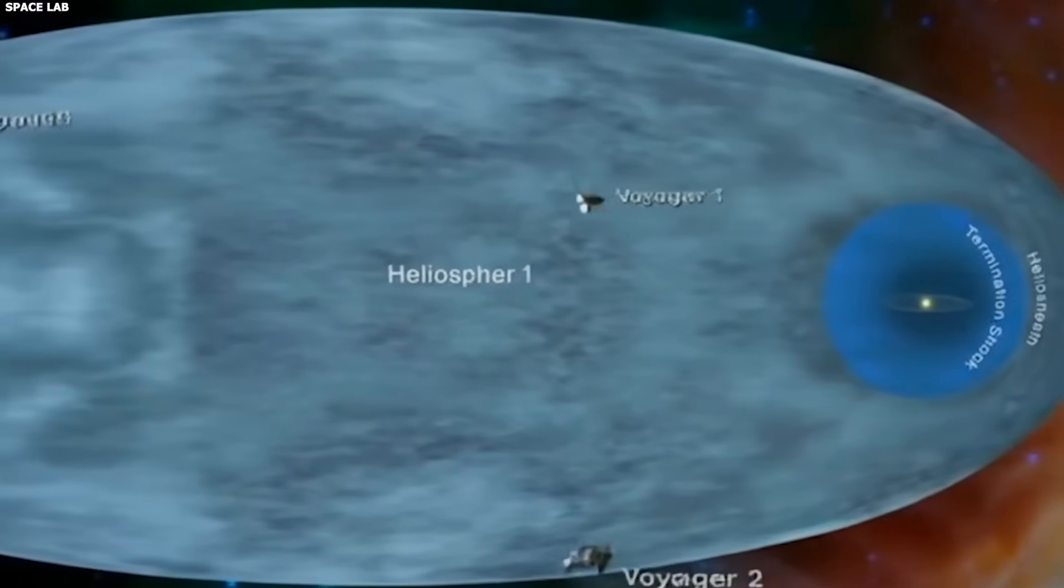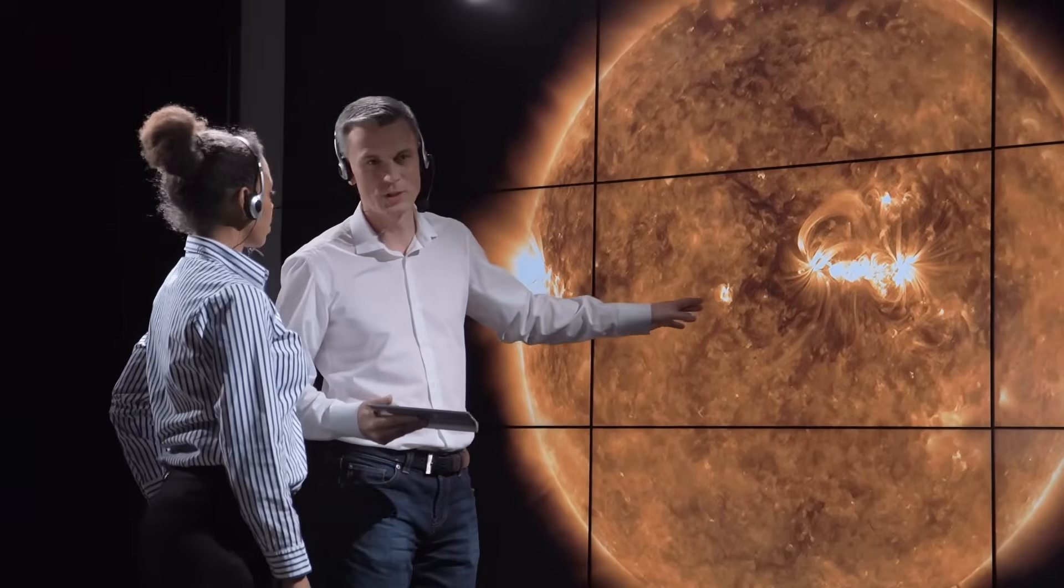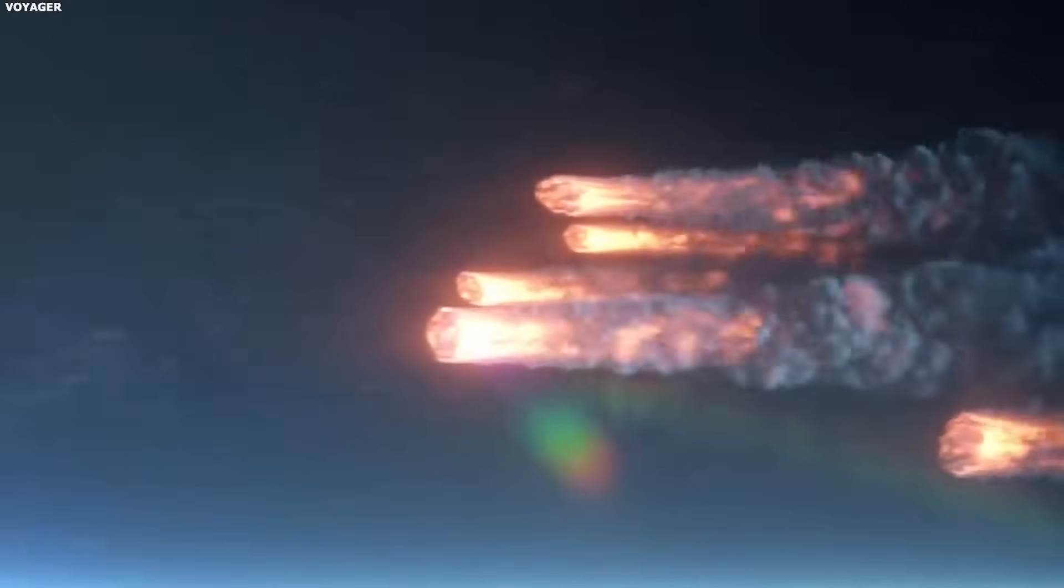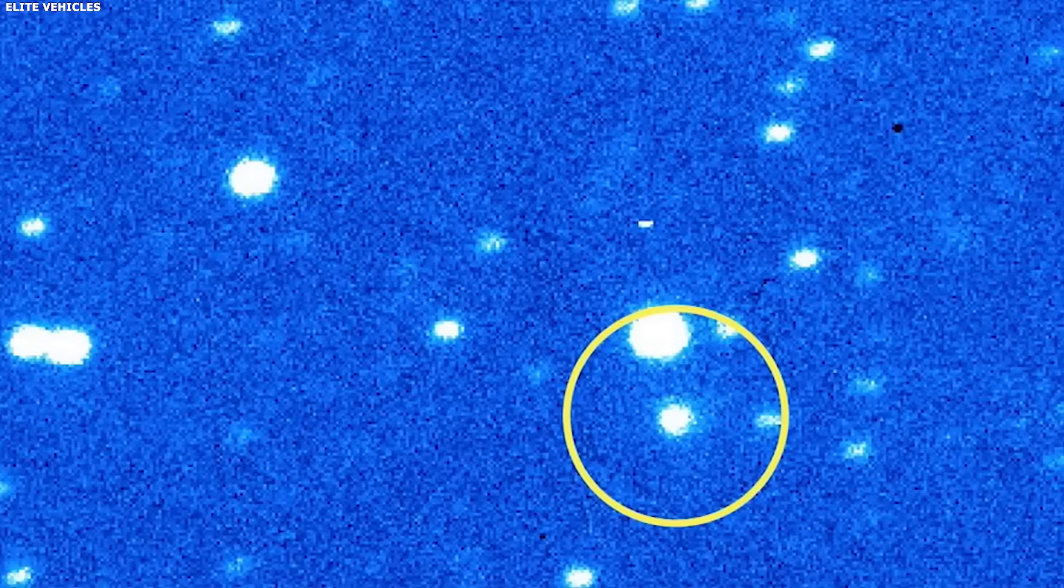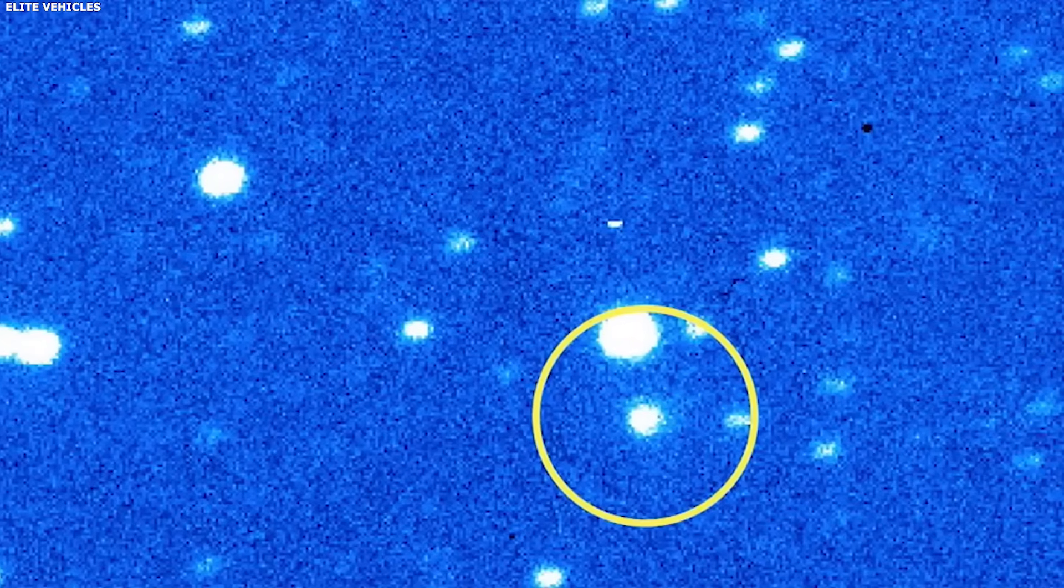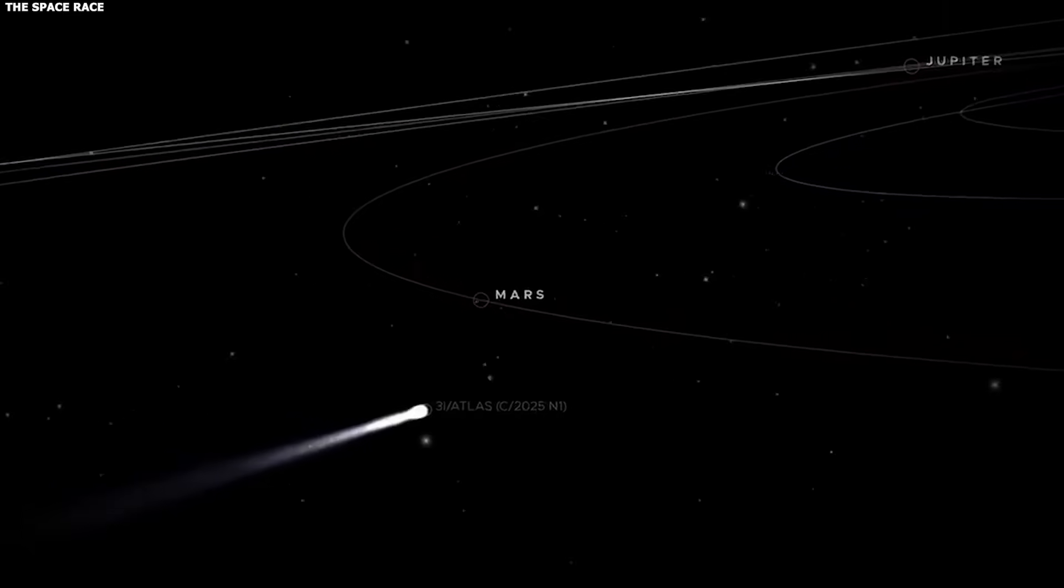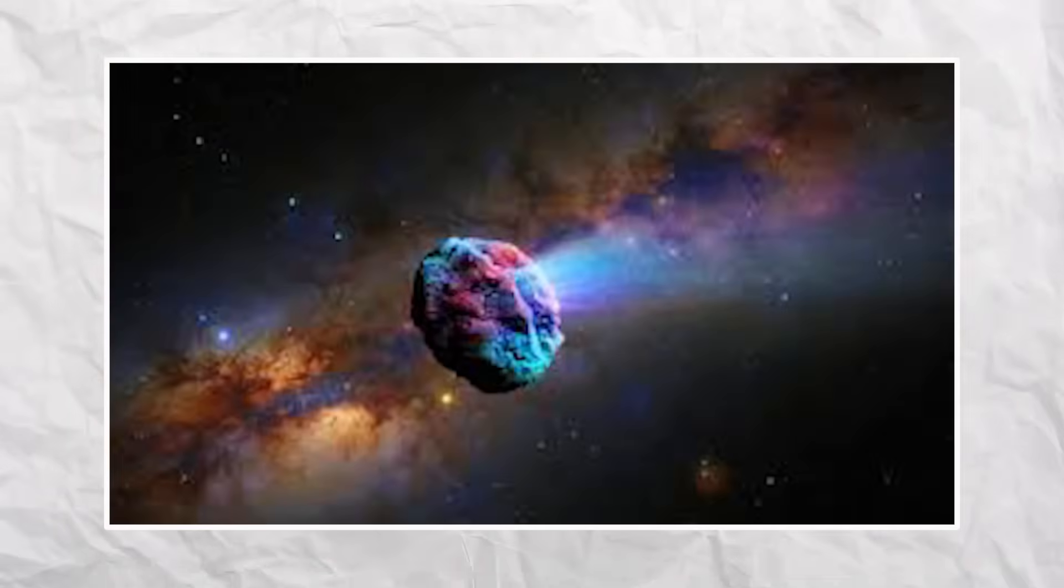That data will help us understand whether this is a normal comet doing something unusual, or whether 3I Atlas is fundamentally different from other comets. Specifically, astronomers want to measure the ratio of different molecules. How much water vapor compared to carbon dioxide? How much carbon monoxide? How much methanol? These ratios tell you about the temperature and pressure conditions where the comet formed. They tell you about its history. And the imaging will show us if the anti-tail changes. Does it get brighter as the comet approaches Earth? Does it change shape? Does it fragment? Does the length change? All of that tells us something about what's causing it. Every detail matters when you're trying to solve a mystery like this.